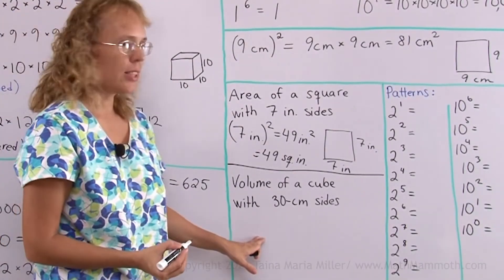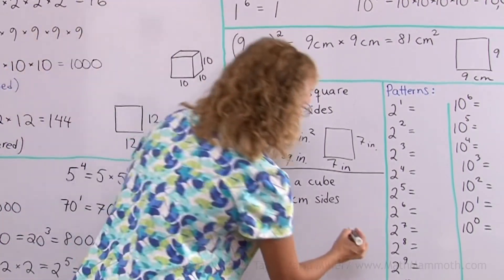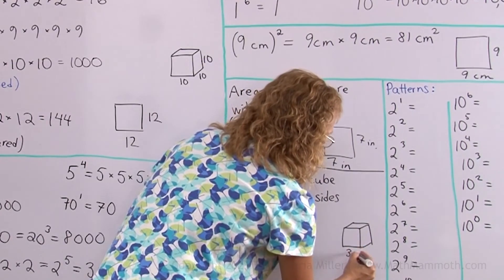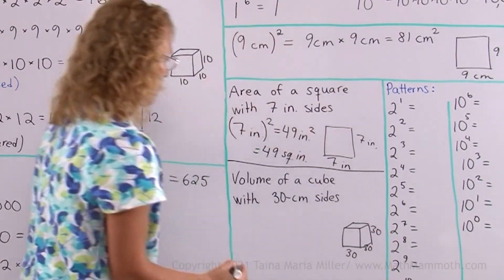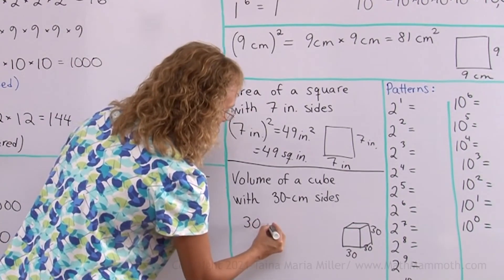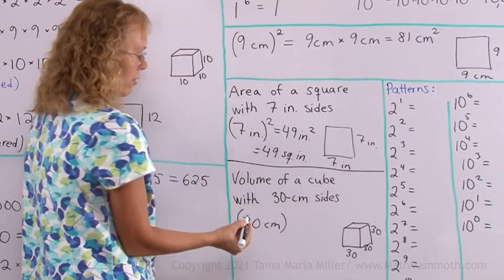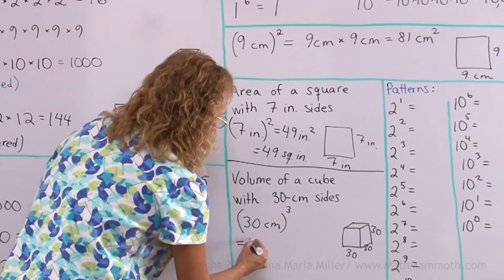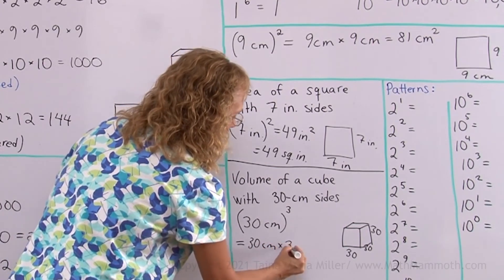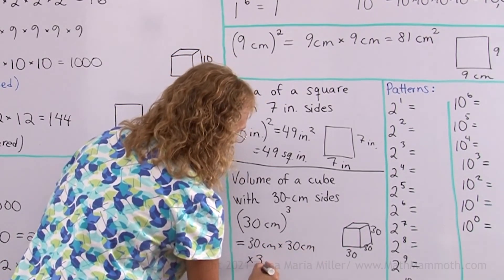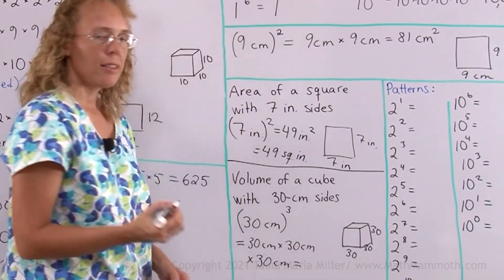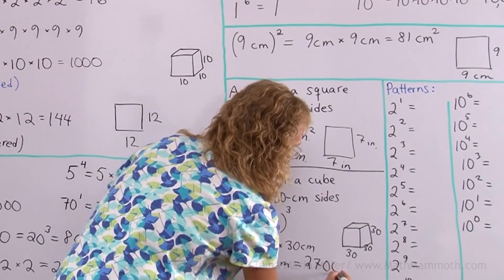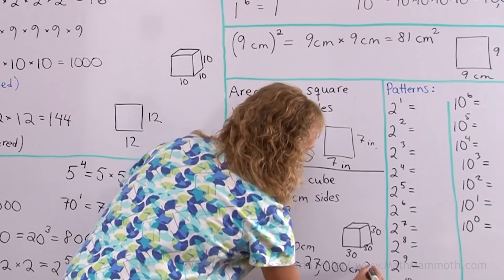Volume of a cube with a 30-centimeter side. Here's a cube — maybe I'll sketch it again here too: 30, 30, 30. I can write this as the quantity of 30 centimeters, cubed, which is the same as 30 centimeters times 30 centimeters times 30 centimeters. Now we will get three times three times three is 27, and then those three zeros get tagged, and then we get cubic centimeters.